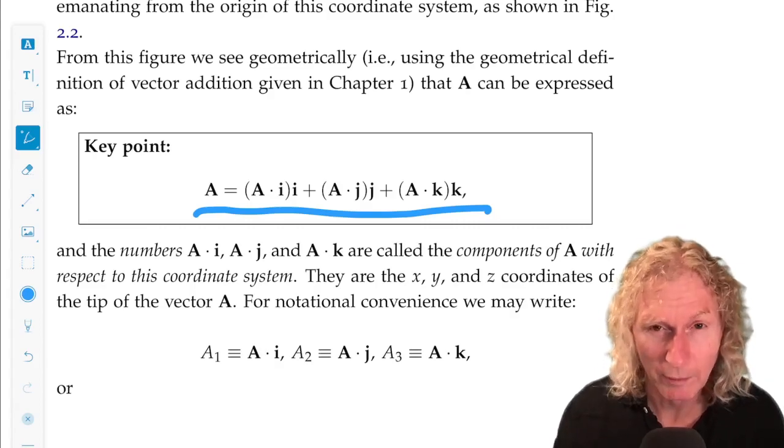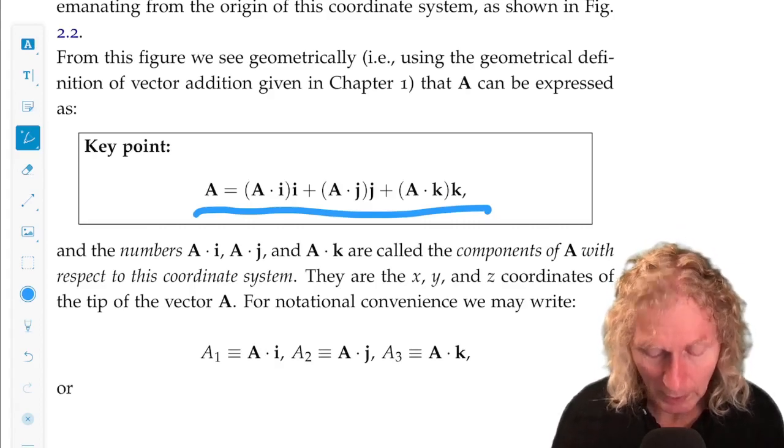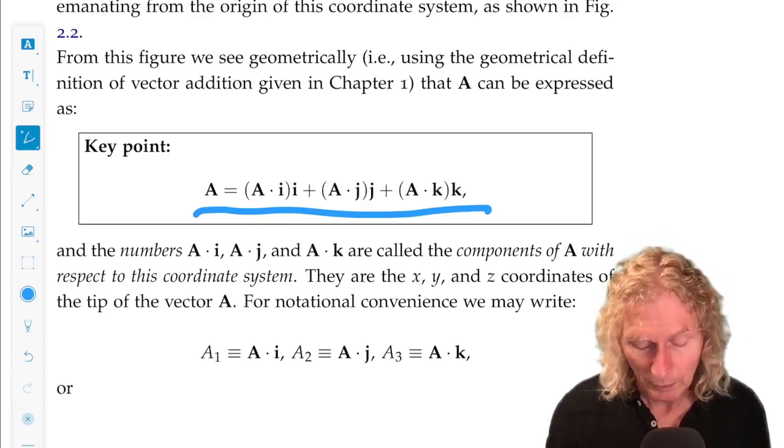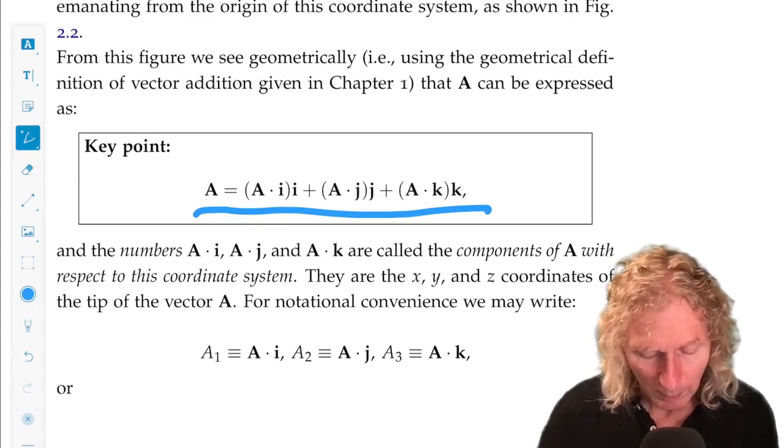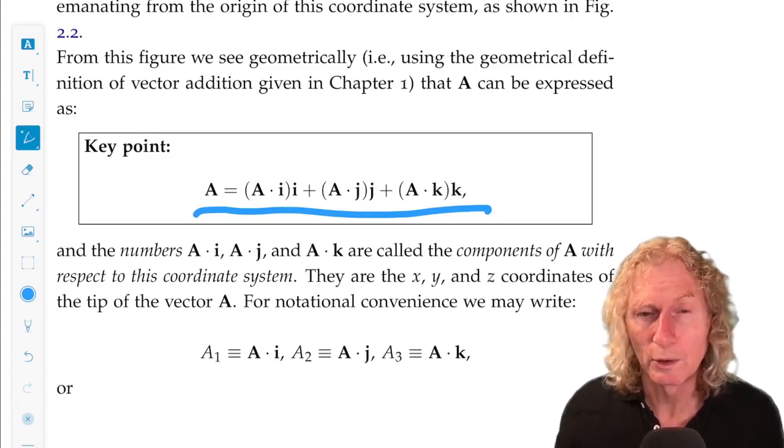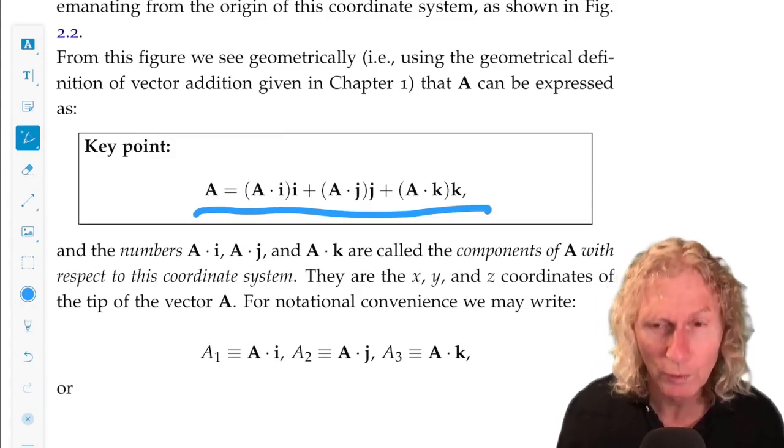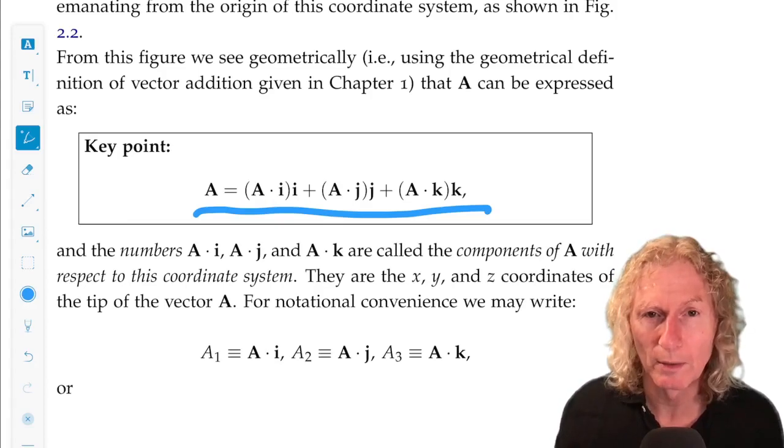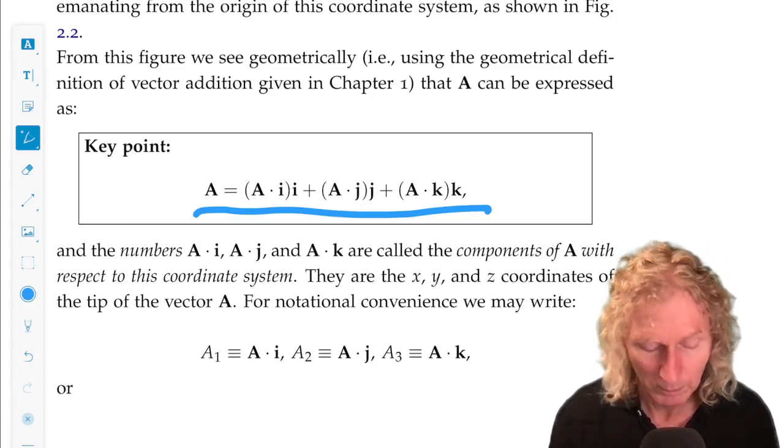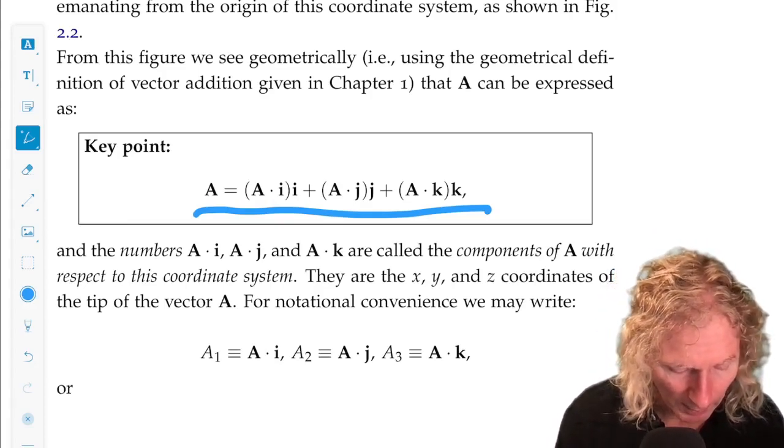So a dot i, a number, multiplied by the vector, unit vector i, a dot j, a number, and so on. And these are the projections onto the coordinate directions, and we just add them up using the standard method of head to tail, like we did already.